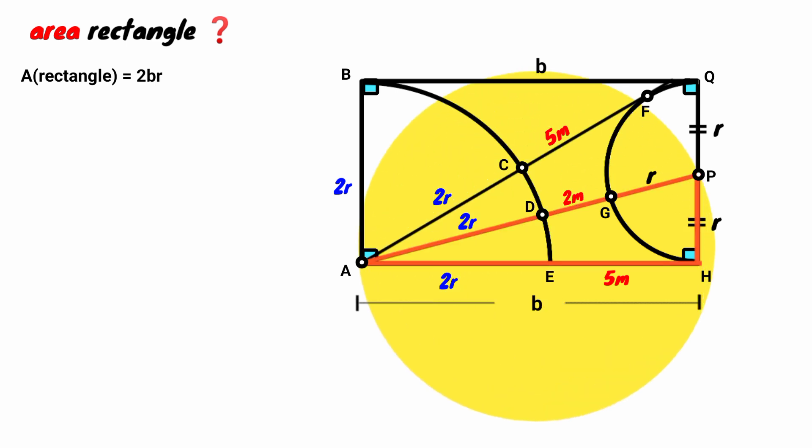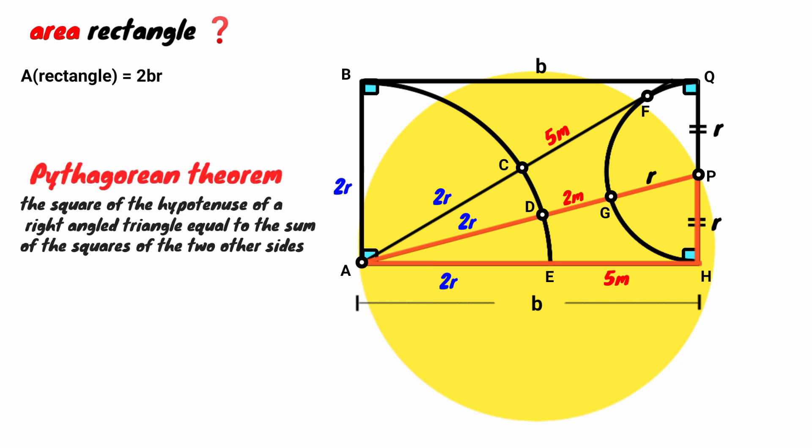Now look at this triangle. It is a right angle triangle. We use the Pythagorean theorem on it. The Pythagorean theorem states that the square of the length of the hypotenuse of a right angle triangle is equal to the sum of the squares of the length of the two other sides. The hypotenuse is the side facing the right angle, which is this here. So by Pythagoras, 2R plus 2 plus R all squared equals 2R plus 5 all squared plus R squared.